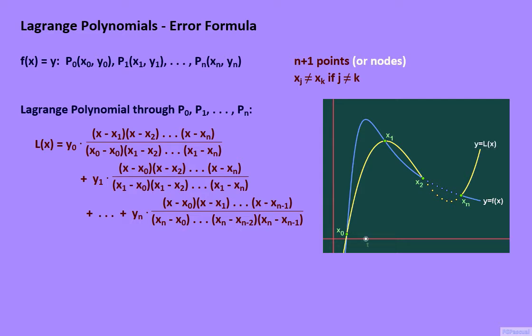While at any other x-coordinate such as x = t, where t is not equal to xⱼ for j equals 0 through n, L(t) need not be the same as f(t).